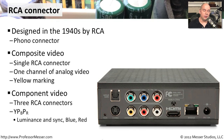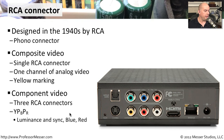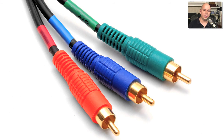RCA interfaces are also used to send component video. You can see the three component video connectors marked Y, PB, and PR. The Y stands for luminance — the amount of brightness of the signal. PB stands for blue, and PR stands for red. These are usually used for higher definition. The colors match: green for Y, blue for PB, and red for PR. Match those up on the back of your device and you're generally sending high-definition signals.